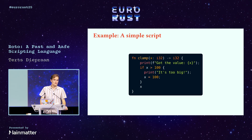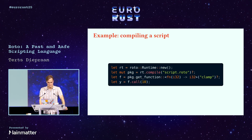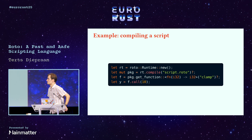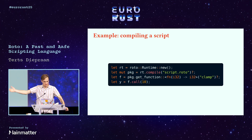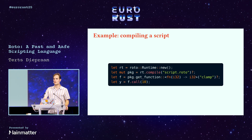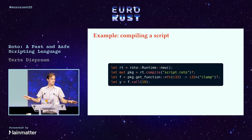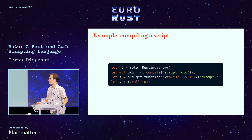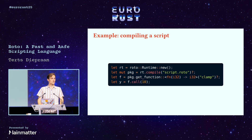Let's say we store this script in a file called script.roto and we want to use it. What we have to do is create a Roto runtime, tell it to compile the script, and get the function out with the proper type. We get a properly typed function, and Roto will do all the necessary checks that this is actually the correct function type. Then we call .call and get an answer out.